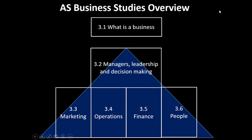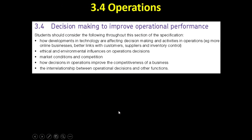This is the operations unit, and as you're studying this unit — this is from the AQA specification — I want you to think about how developments in technology are affecting things like the supply chain and inventory control. Better technology should enable better communication, and maybe an organisation can cut its costs because it can hold less inventory.